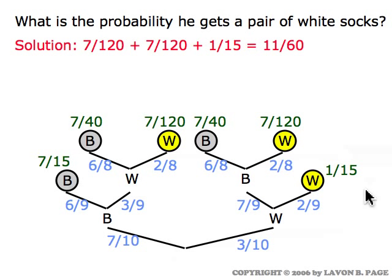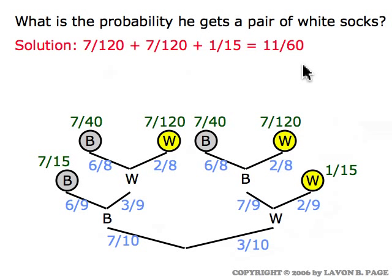The first question is: what's the probability he gets a pair of white socks? The cases where he winds up with a pair of white socks correspond to three scenarios: his first sock is blue then he draws two whites, or he draws white-blue-white, or he draws just two whites. Adding their probabilities together gives 11 over 60 as the probability of him winding up with a pair of white socks.